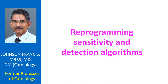Reprogramming the sensitivity and detection algorithms are often helpful in removing interference due to myopotential oversensing and T-wave oversensing. Radiofrequency catheter ablation is an option in paroxysmal supraventricular tachycardia. Lead fracture can be detected by image intensifier fluoroscopy and is also indicated by an increase in lead impedance on interrogation.